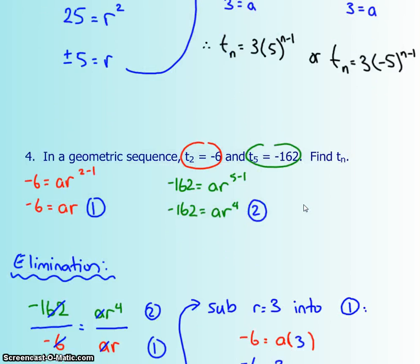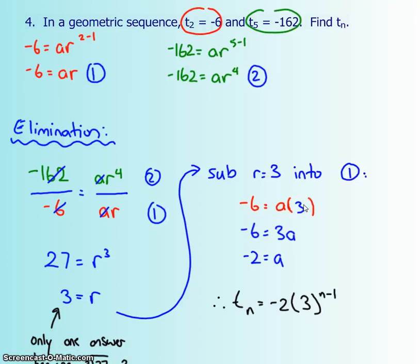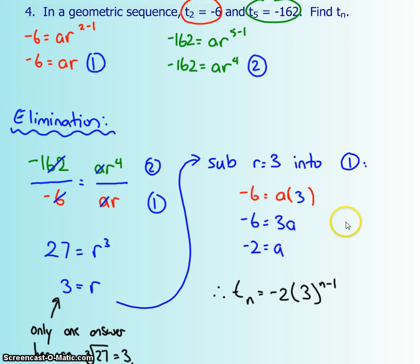Now the last example is just another one of those, but I wanted to show you that you might not have more than one answer all the time. So again, I just made my two equations, my red equation, my green equation, exactly the same as I did before. I put them on top of each other and started eliminating. So I cancelled out the A's and I divided those two and I got 27. R⁴ divided by R¹ is R³ and I'm going to take the cubed root. Now when I take the cubed root of a positive, there is only one answer, which is positive 3.